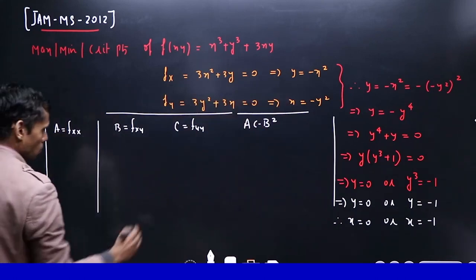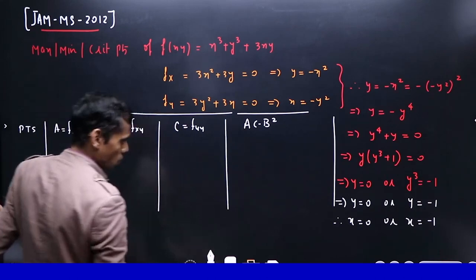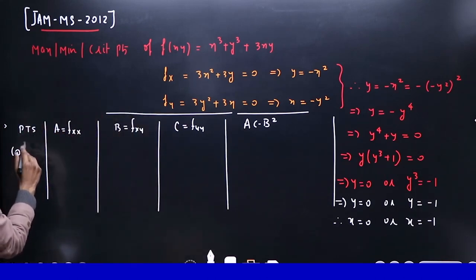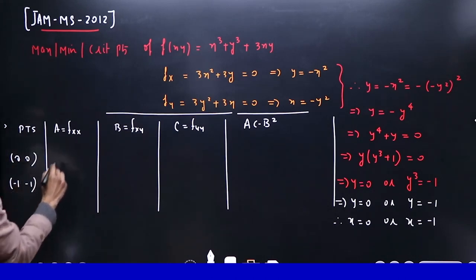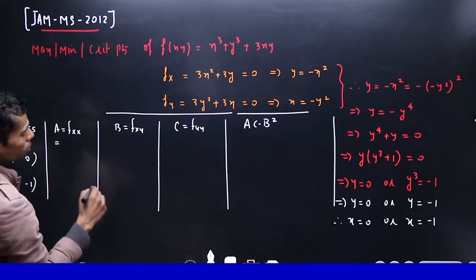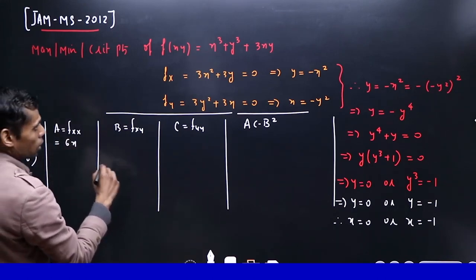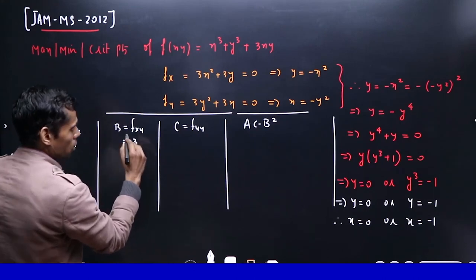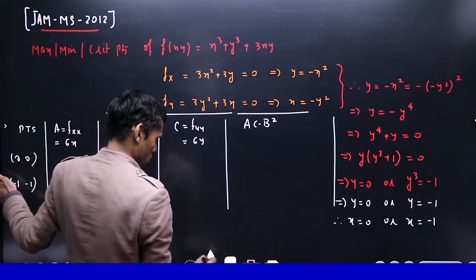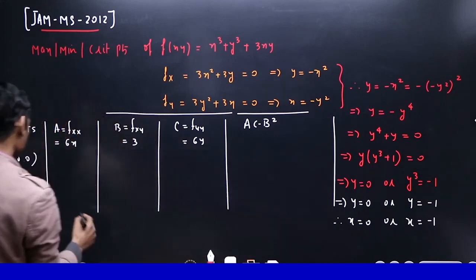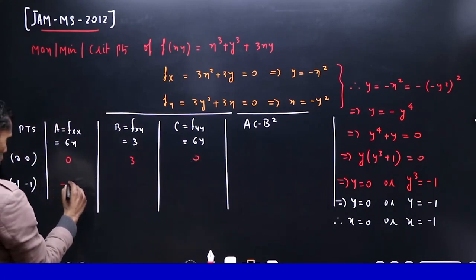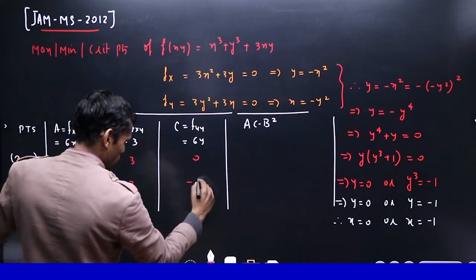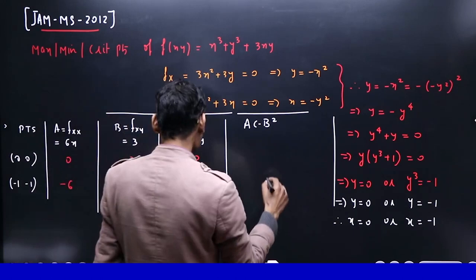What am I thinking about? In this point, you have (0, 0), and the next point is (-1, -1). And the double derivative with respect to x is 6x, xy is 3, yy is 6y. We are talking about (0, 0), this is 3, this is 0. This is minus 6, this is 3, this is minus 6. And the AC minus B² is negative, saddle point.